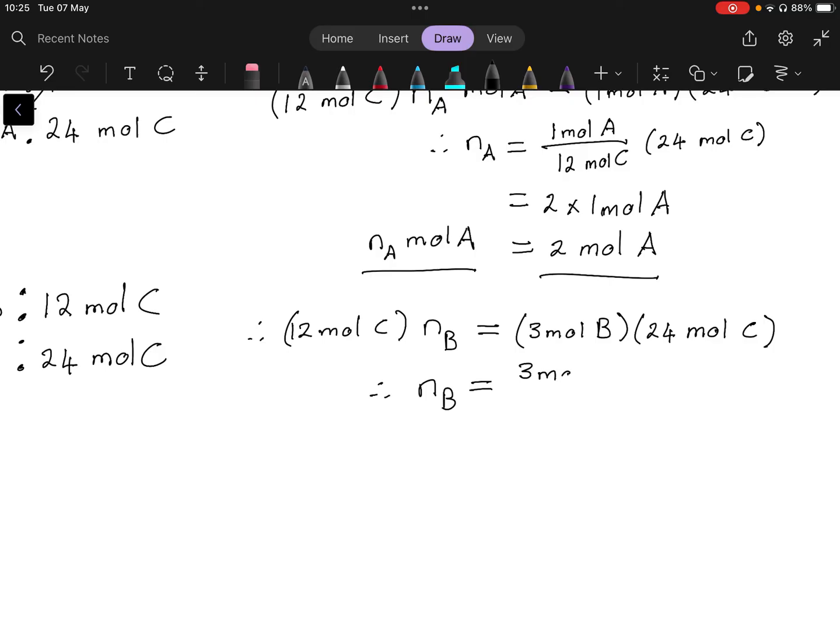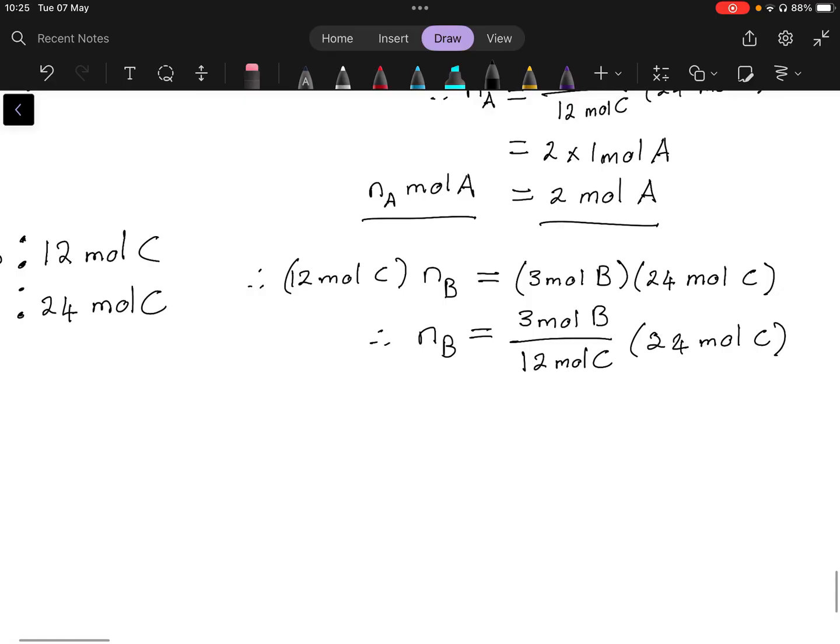So in other words we end up with 12 mole C times nB times nB is equal to 24 mole C times 3, so 3 mole B times nB is equal to 3 mole B divided by 12 mole C times the 24 mole C. But then it's still going to be two times so you'll get 2 multiplied by 3 mole B. In other words you need 6 mole of B.